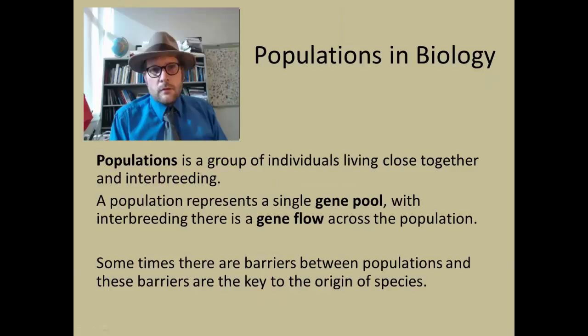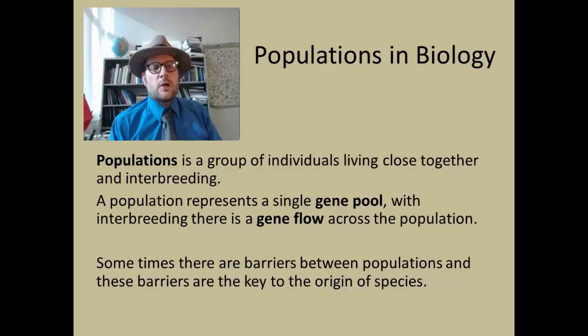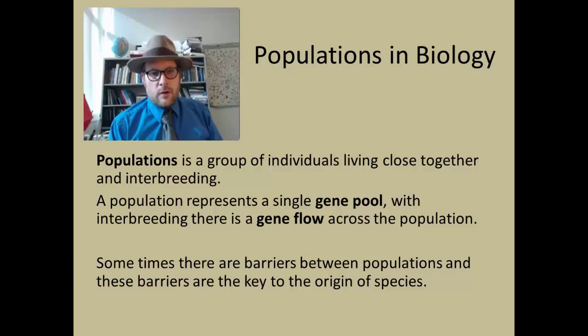Populations in biology are basically a group of individuals living close together and interbreeding. A population represents a single gene pool with interbreeding across that population, so gene flow between each of the individuals is unimpeded. Sometimes there can be barriers that develop between populations — a mountain range, a river — that isolate the two populations and restrict gene flow from one population to another.